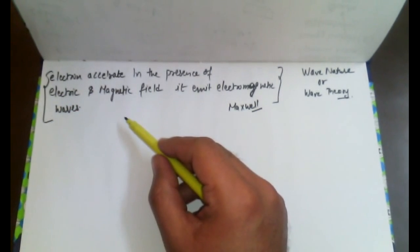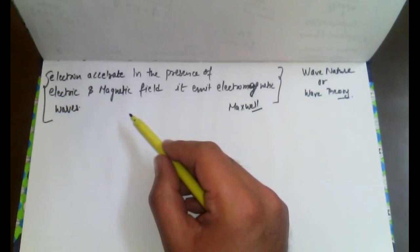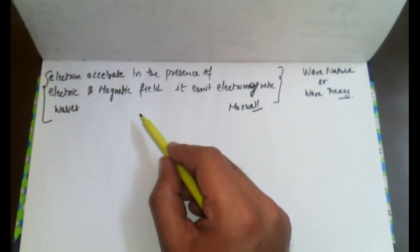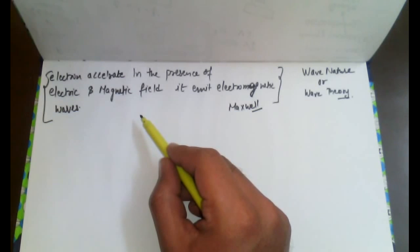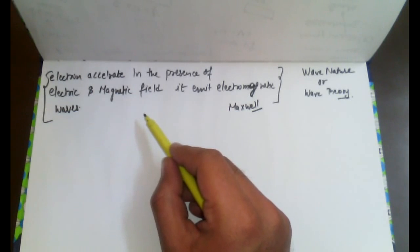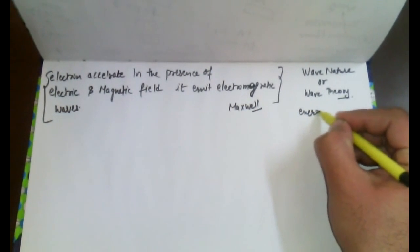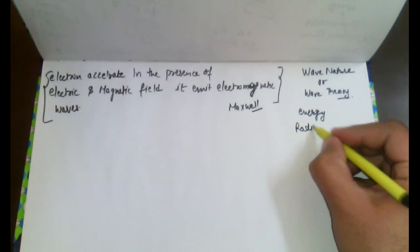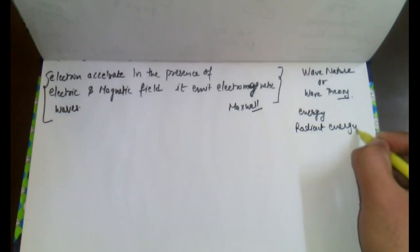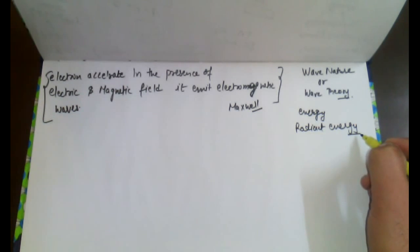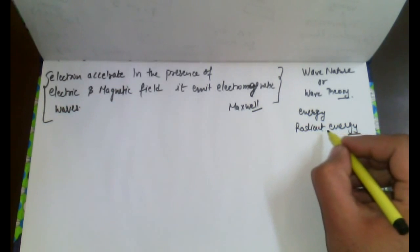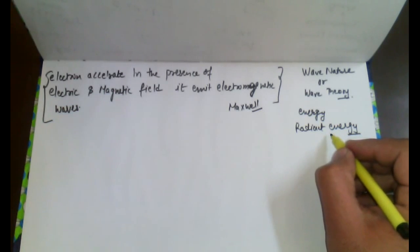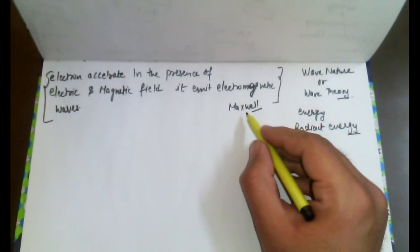These electromagnetic waves travel in a continuous form and carry energy. We call this energy radiant energy. The waves associated with the electric and magnetic field we call electromagnetic waves.